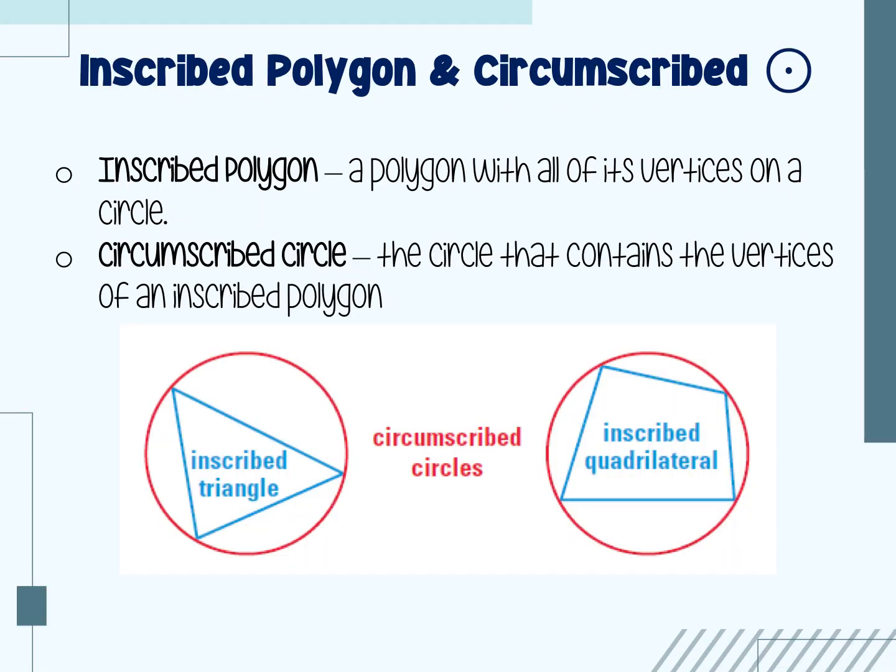This one is called the inscribed polygon and circumscribed circle. An inscribed polygon is a polygon with all of its vertices on a circle. Think of the word inscribed as being inside — the polygon is inside the circle. A circumscribed circle is a circle that contains the vertices of an inscribed polygon. So I could say that the triangle is inscribed in the circle.